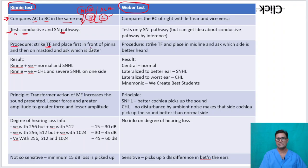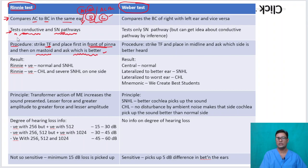The procedure: you strike the tuning fork and place it first in front of the pinna — testing the conductive pathway — then place it on the mastoid — testing the sensorineural pathway — and ask the patient which they can hear better. That is how you do the Rinne's test.